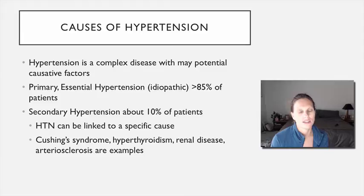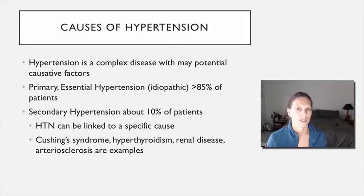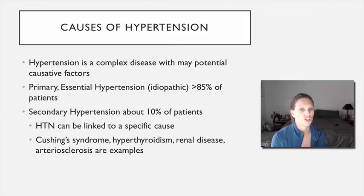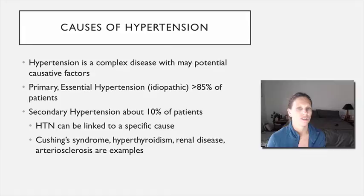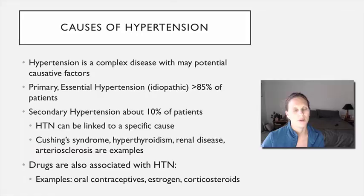Secondary hypertension is where you can find another organic cause driving blood pressure up — for example, hyperthyroidism or an adrenal tumor causing excess norepinephrine secretion that hits alpha receptors. The hypertension is secondary to an organic problem. However, secondary hypertension affects a much smaller percentage of patients — primary is far more common.